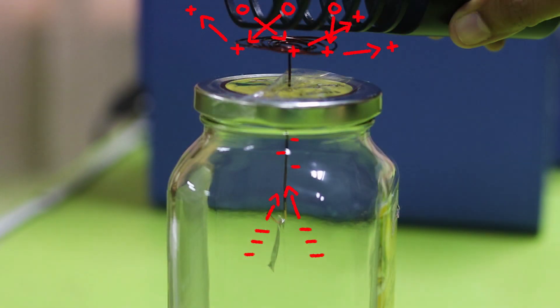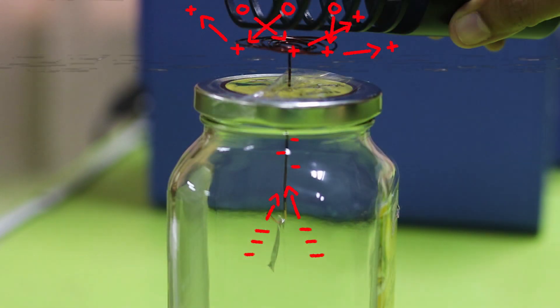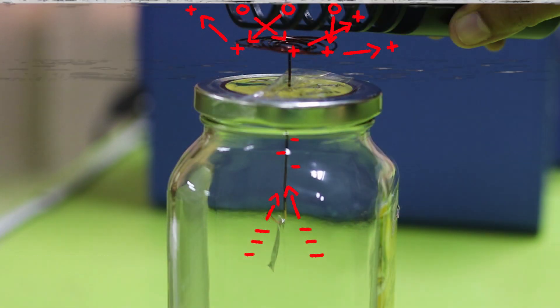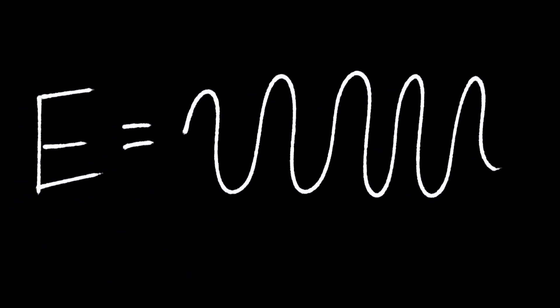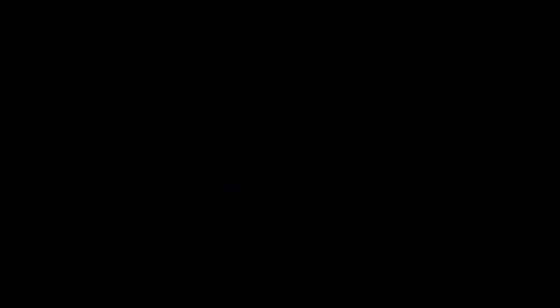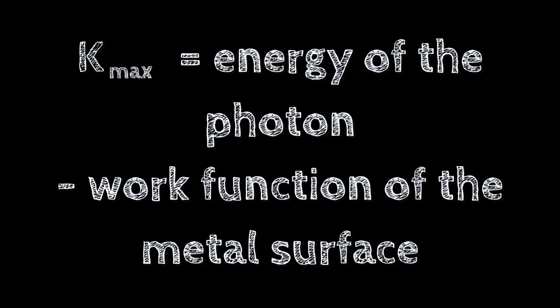How? By transferring the photons' energy to the electrons, making them jump. Isn't it just waves transferring the energy? Well, based on the experiments, the energy that the electrons get is not continuous like that of a wave, but rather it is proportional to the frequency of light.